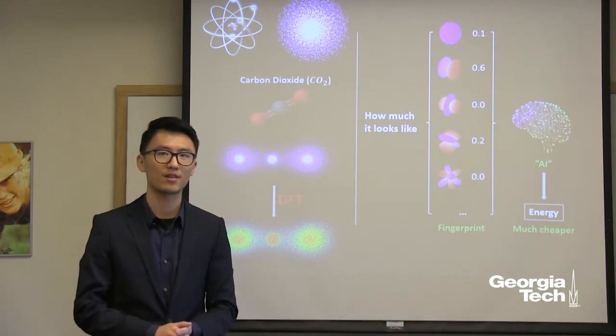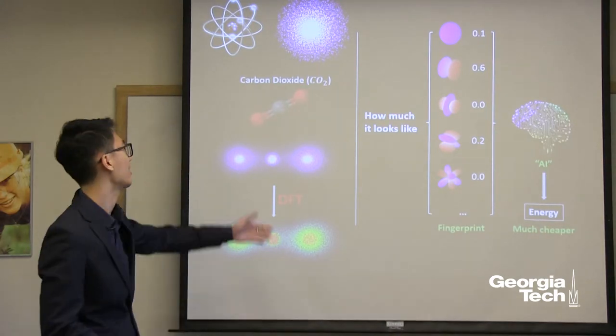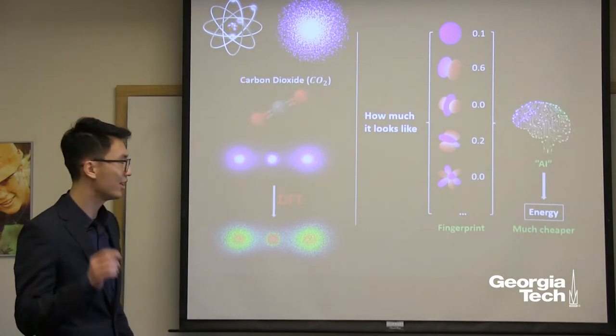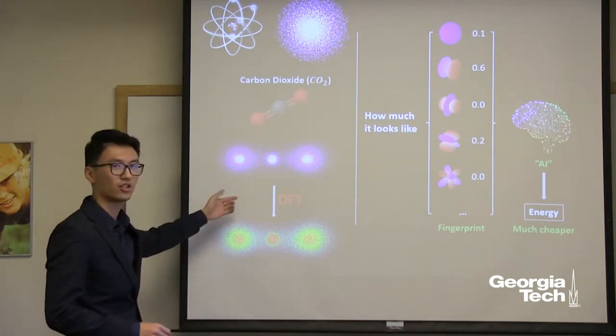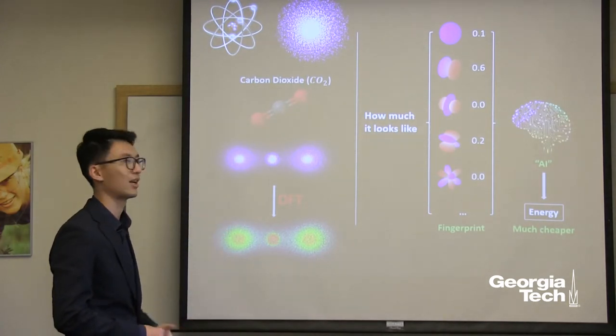Instead, electrons form a cloud around the nucleus. For example, this is a realistic visualization of the electron cloud of a carbon dioxide molecule.